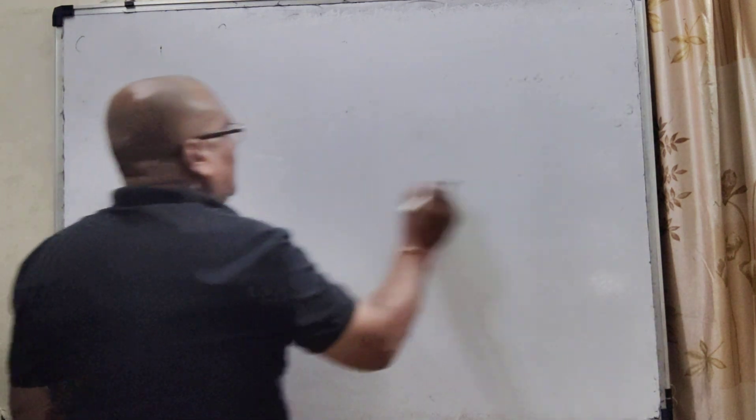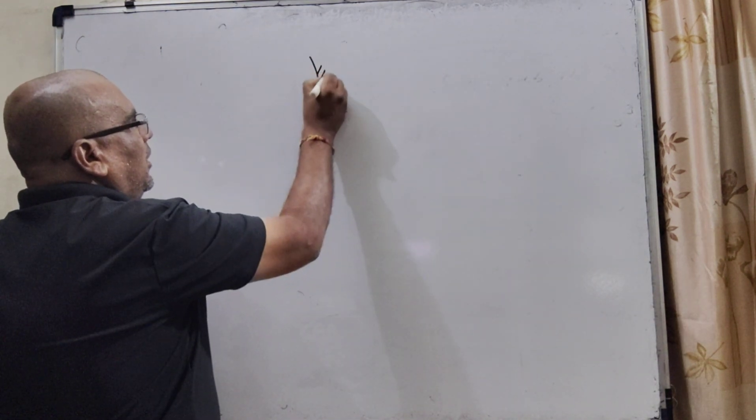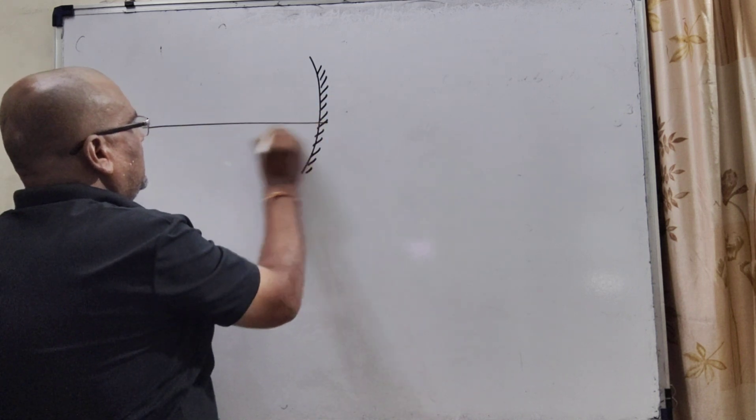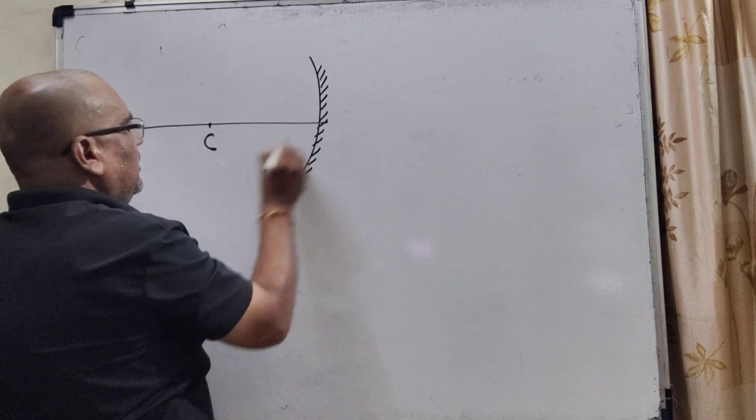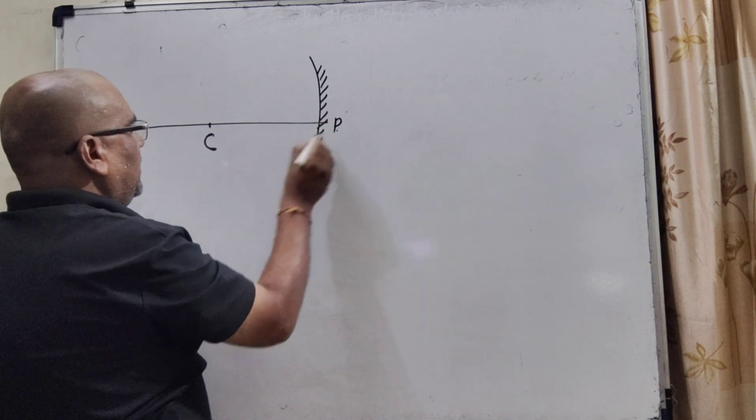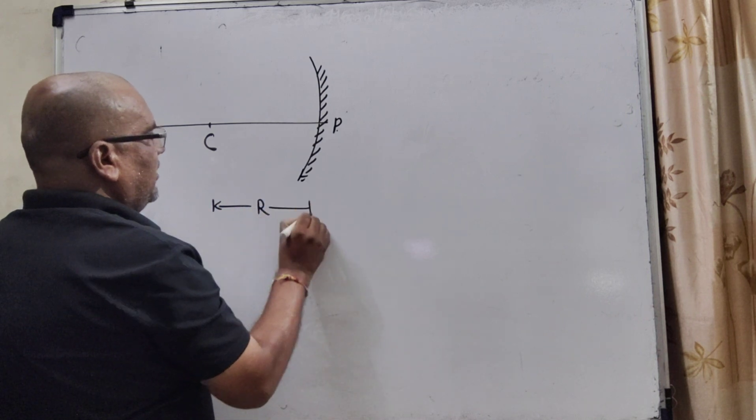Now, let us first understand what the question says. Here, we have given a concave mirror. This is center of curvature, denoted capital C. And this is pole. And the distance from the pole to center of curvature, that is radius of curvature.